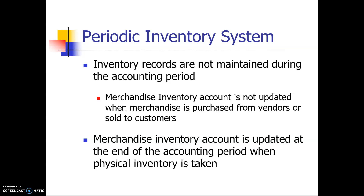Now we want to take a look at the periodic inventory system. Under the periodic inventory system, we are not updating the merchandise inventory account during the period. Whatever we had last period as our ending merchandise inventory becomes our beginning merchandise inventory, and that beginning merchandise inventory is the balance in merchandise inventory all the way until the end of the period.